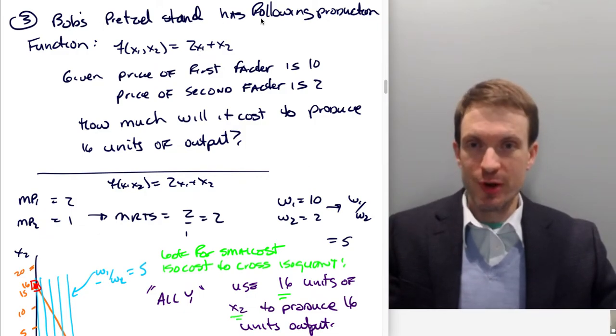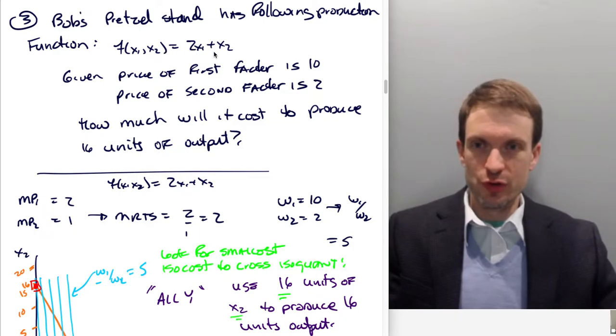Suppose Bob's pretzel stand has the following production function: f(x1, x2) is equal to 2x1 plus x2, which is just telling us that the amount of output we're going to get is going to be 2 times the amount of factor 1 plus the amount of factor 2. We'll assume the price of the first factor is 10, price of the second factor is 2. We want to know how much is it going to cost to produce 16 units of output.